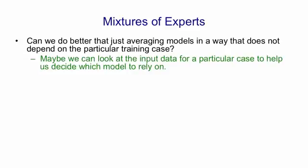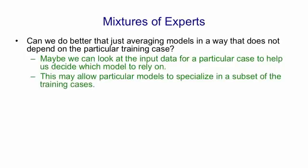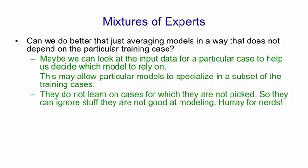So the idea is that we can look at the input data for a particular case, during both training and testing, to help us decide which model we can rely on. During training, this will allow models to specialize on a subset of the cases. They then will not learn on cases for which they're not picked, so they can ignore stuff they're not good at modeling. This will lead to individual models that are very good at some things and very bad at other things.